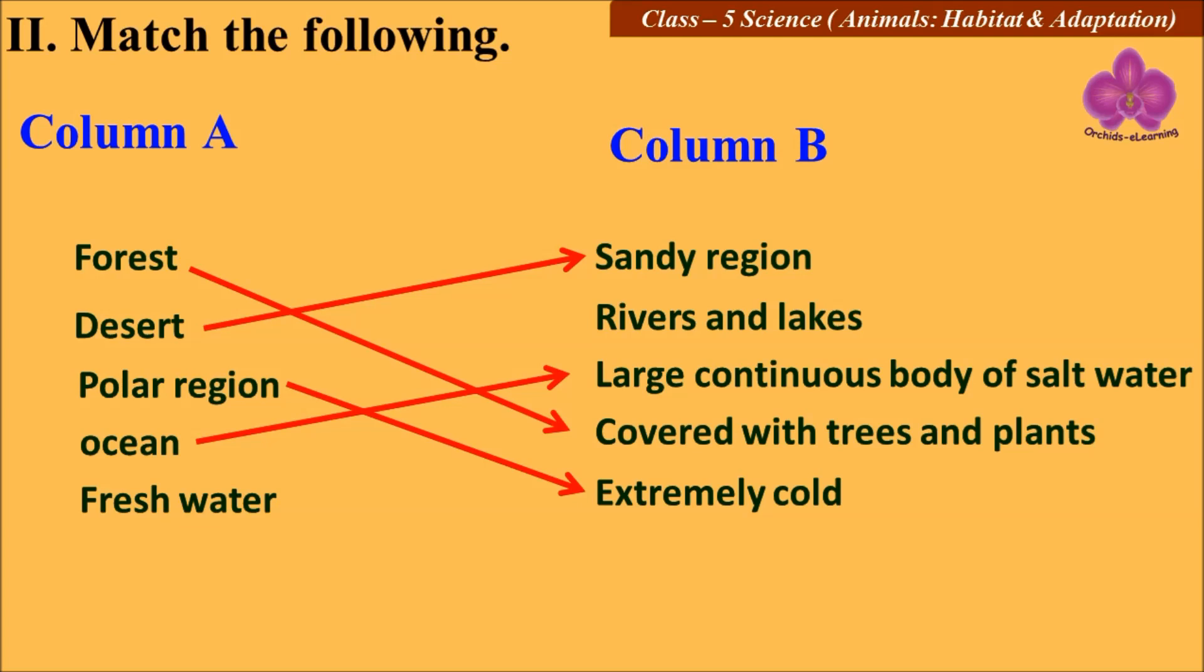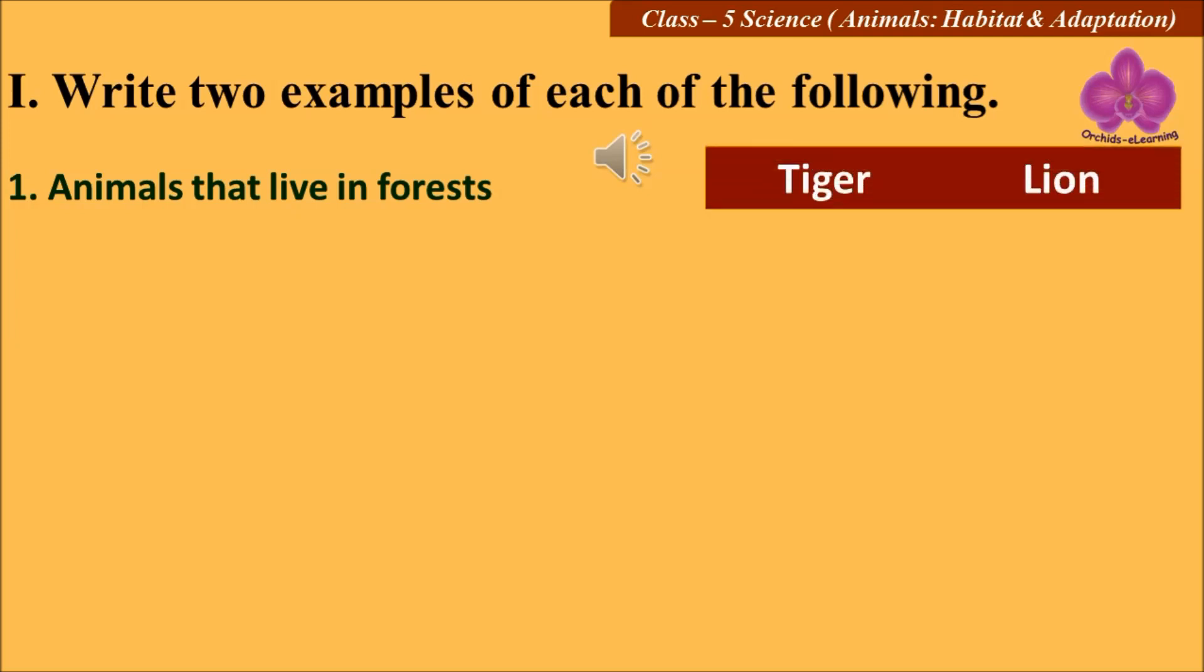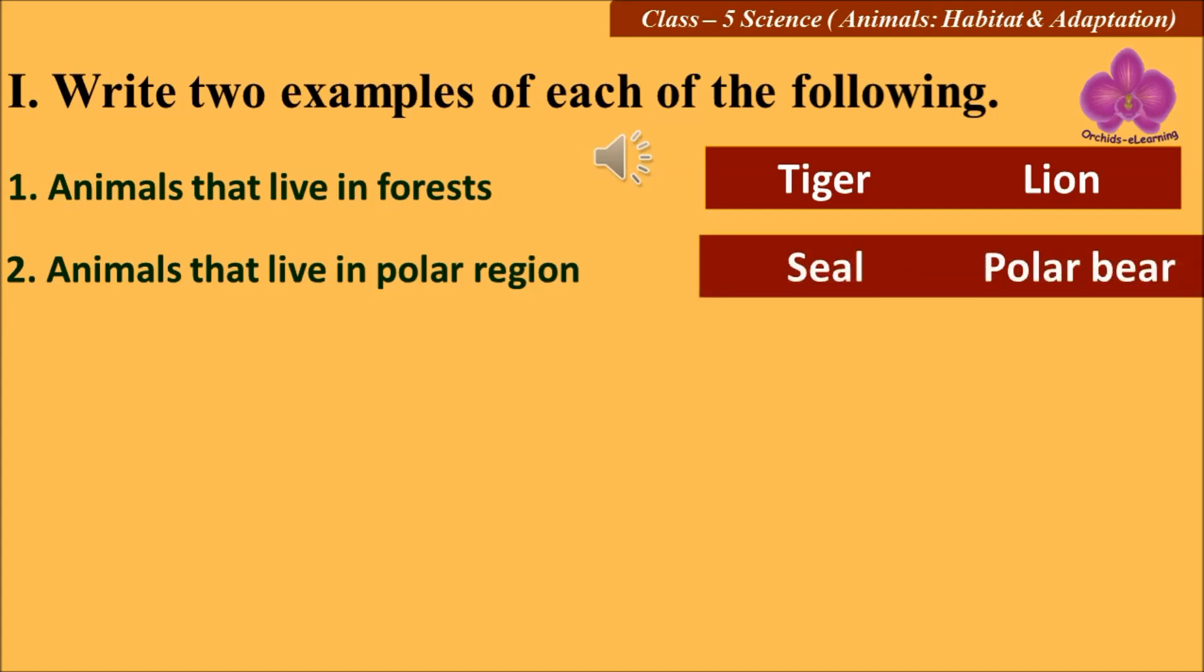Write two examples of each of the following. Animals that live in forest are tiger and lion. Animals that live in polar regions: seal and polar bear.